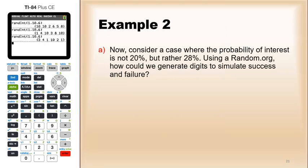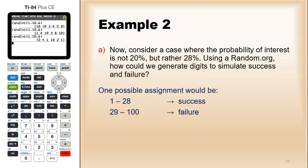Let's change this to make it a little more complicated. Suppose the probability of interest is not 20%, but rather 28%. If I was to use random.org, how can I generate digits to simulate success and failure? One possible assignment would be instead of going from one to 10, let's go from one to 100, and then anything between one and 28 would be success and everything else would be a failure.